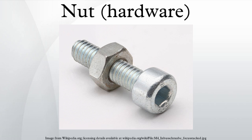Nuts are graded with strength ratings compatible with their respective bolts. For example, an ISO Property Class 10 nut will be able to support the bolt proof strength load of an ISO Property Class 10.9 bolt without stripping. Likewise, an SAE Class 5 nut can support the proof load of an SAE Class 5 bolt, and so on. A wide variety of nuts exists, from household hardware versions to specialized industry-specific designs that are engineered to meet various technical standards.